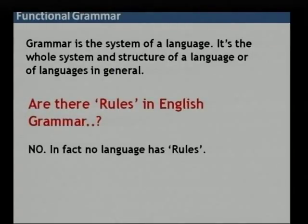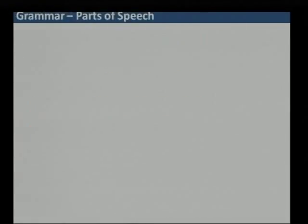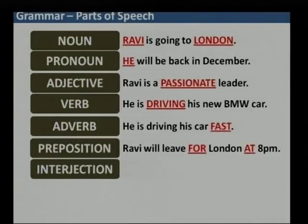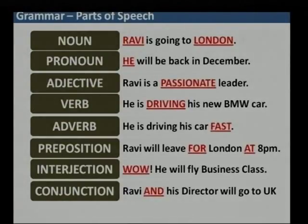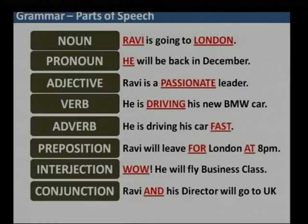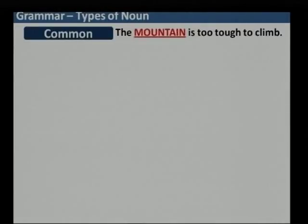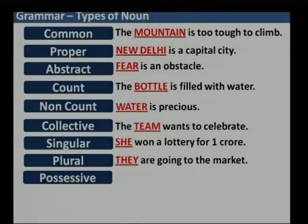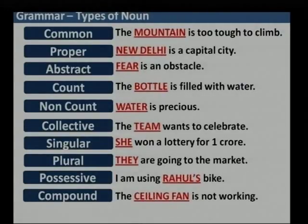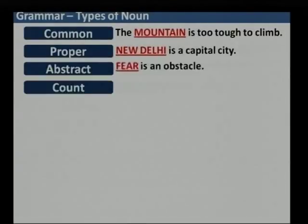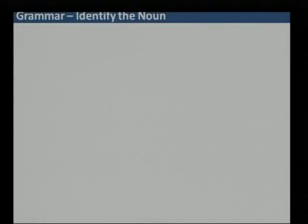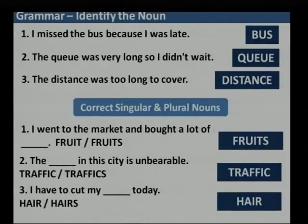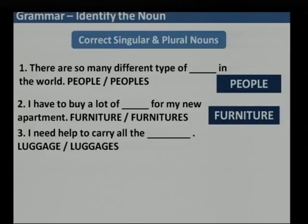Now what do we mean by grammar? These are basically rules in English — or rather, structures. We went through the parts of speech: noun, pronoun, adjective, verb, adverb, preposition, interjection, and conjunction. Today we will talk a bit more about pronoun. Noun was covered on Saturday with examples, and we also did a lot of examples for pronoun as well.